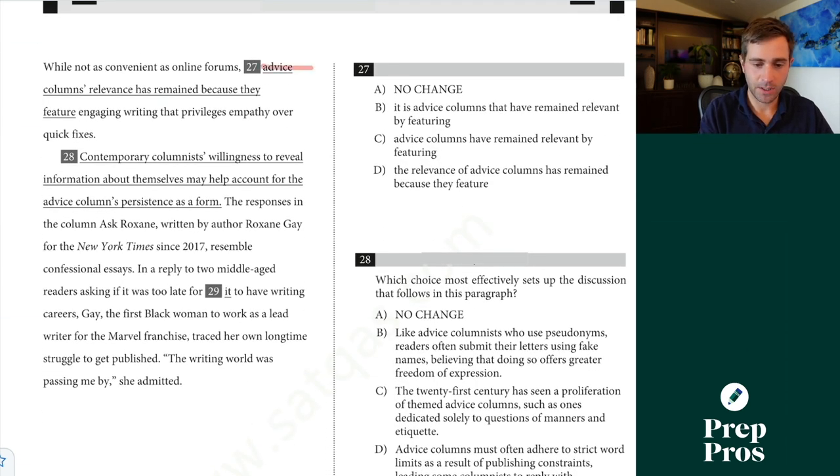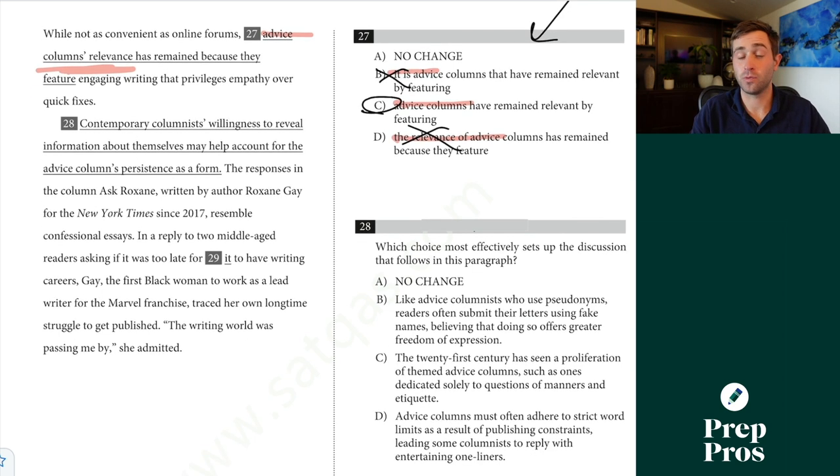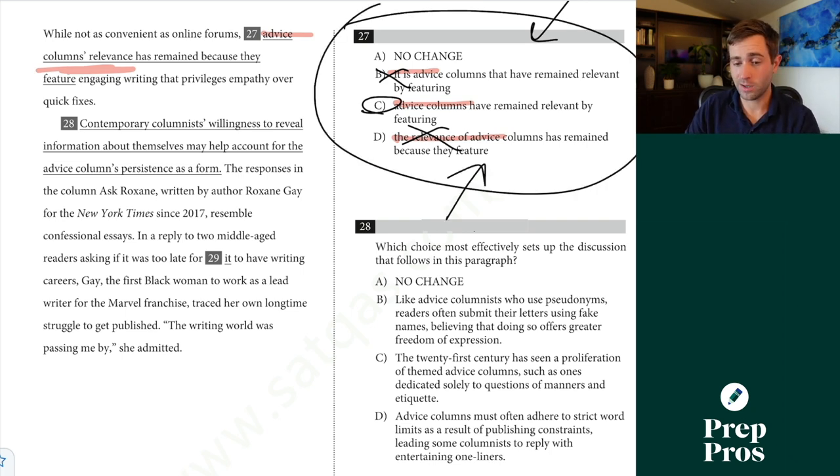27 here, this is a misplaced modifier question. There's a pattern that gives these questions away pretty easily. Well, not as convenient as online forums. Advice columns. Relevance is not what we're saying is not as convenient as online forums. It's not it. It's not the relevance. We're saying advice columns themselves are not as convenient as online forums. That's why C is our correct answer. This has nothing to do with wordiness and redundancy. That's a really common mistake that a lot of students make. This is why making sure you're knowing those patterns of the answer choices is so important because it really lets you identify what concept you're being tested on.